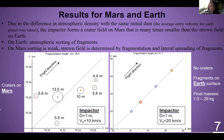Due to the difference in atmospheric densities, the same impactor forms a crater field on Earth that is many times bigger than on Mars. We can also see that fragments experience atmospheric sorting on Earth, meaning they line up along the trajectory by their masses. On Mars, this effect is weak, and the crater field is mainly determined by fragmentation and lateral spreading of fragments. Fragmentation height on Earth is about 60 kilometers and on Mars is about 30 kilometers.